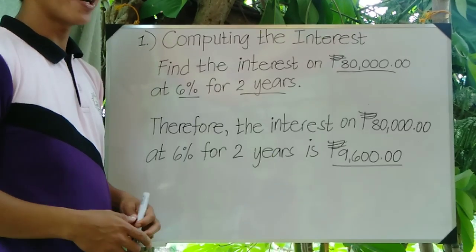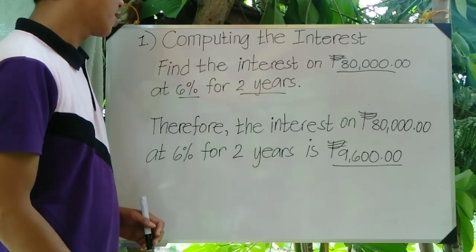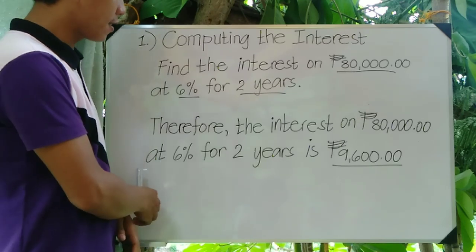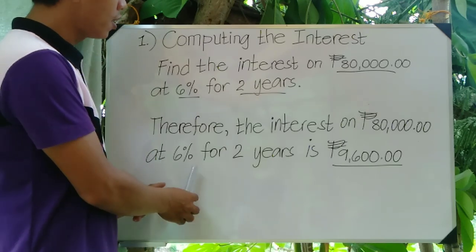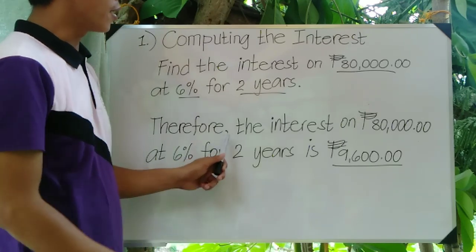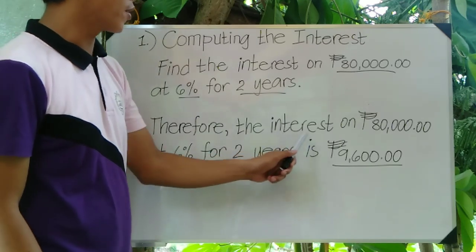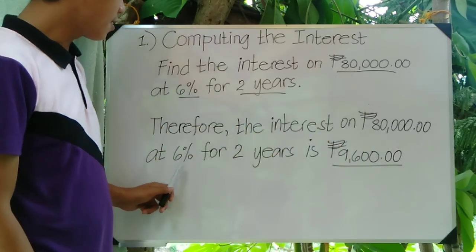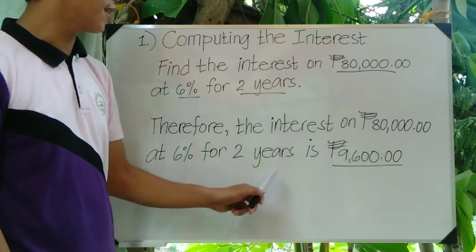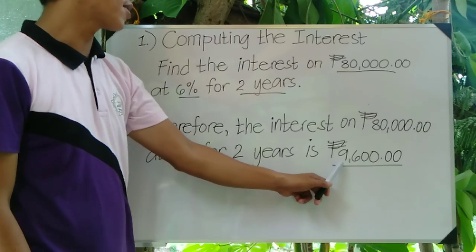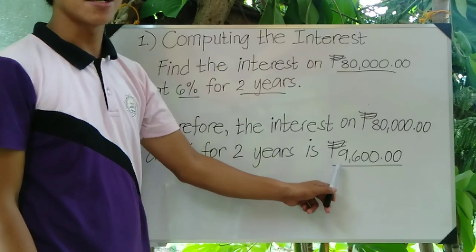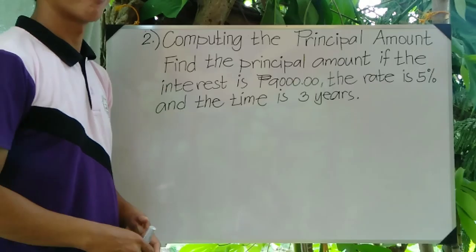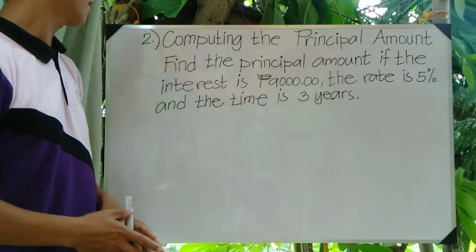To write our answer in scholarly presentation: therefore, the interest on 80,000 pesos at 6% for two years is 9,600 pesos. Now let's proceed to our second problem.